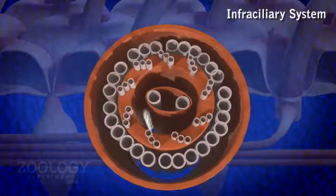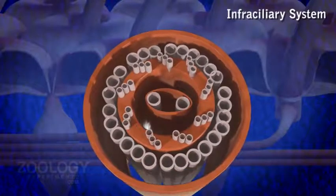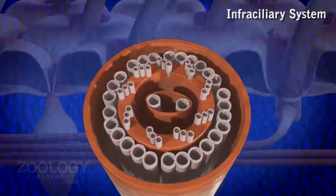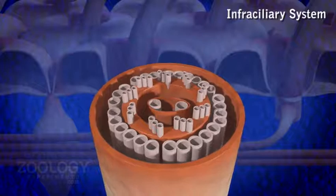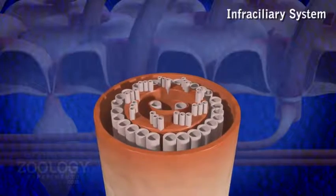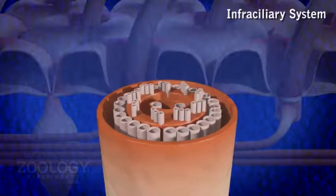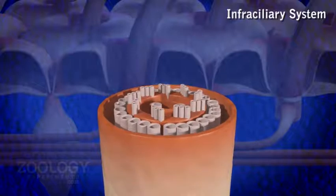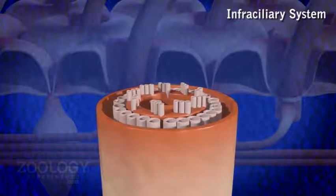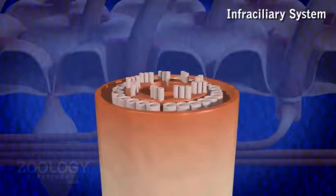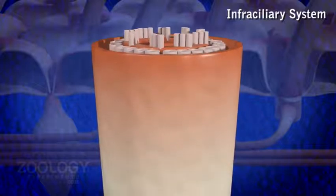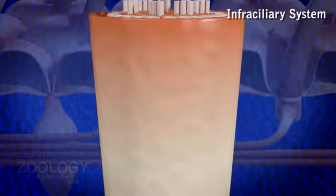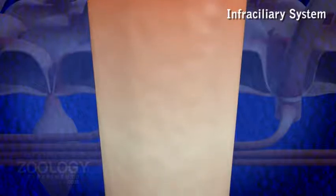3. Infraciliary System: At the base of pellicular alveoli, the infraciliary system is constituted by the basal bodies and kinetodesmata. Basal Bodies: The base of each cilium is produced into a tube-like structure called a basal body or kinetosome.